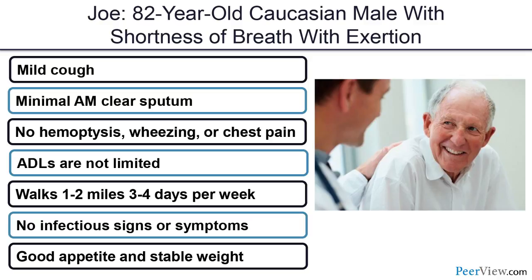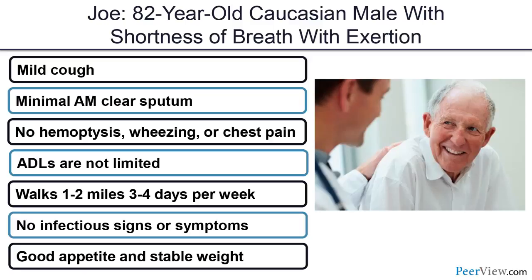Let's start with Joe as our first case — he's 82 years old, a Caucasian male with shortness of breath on exertion, a mild cough, and some morning sputum production, but no wheezing or chest pain. His activities of daily living are not limited at all; he walks one to two miles three to four times per week with his dogs. No infectious signs or symptoms, good appetite, and stable weight.